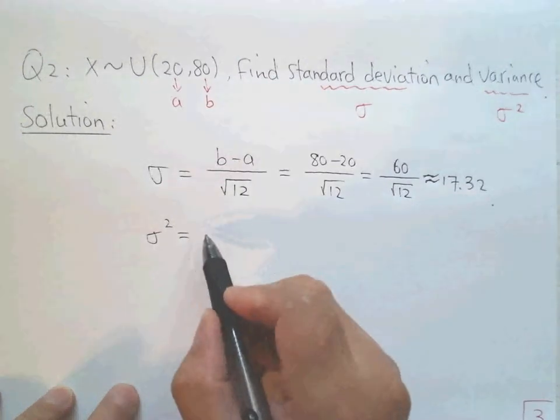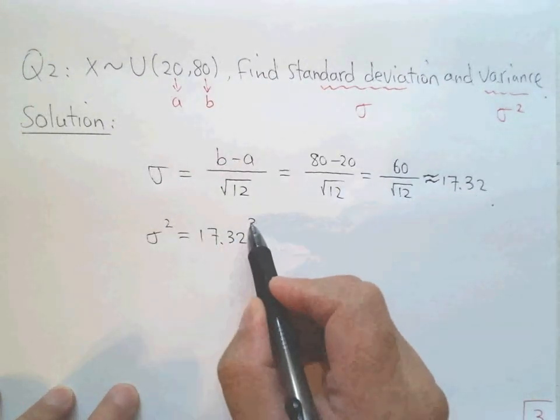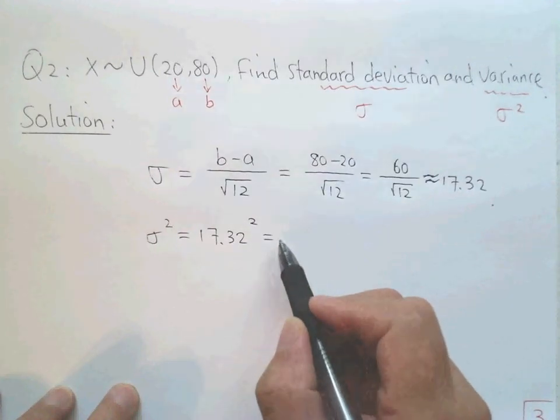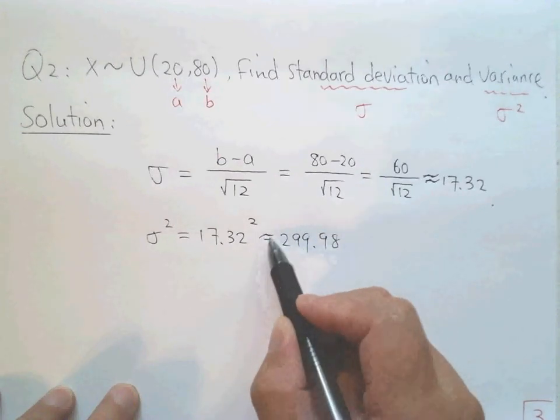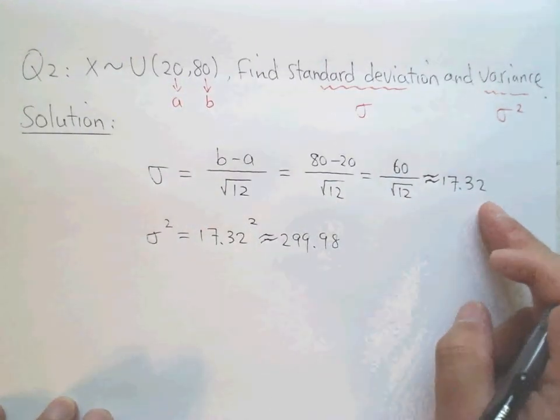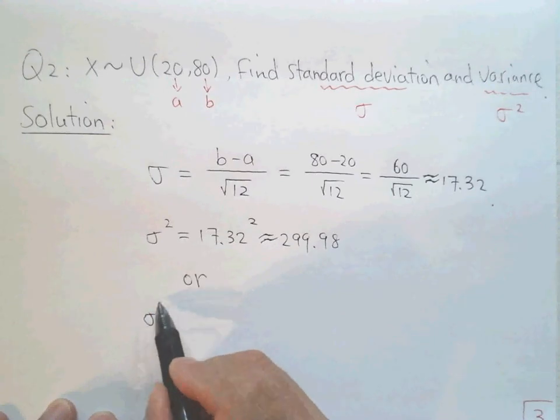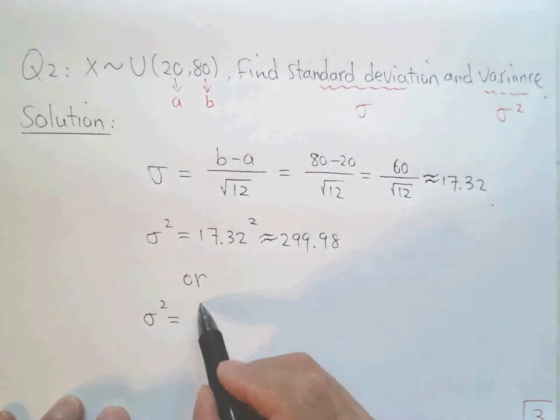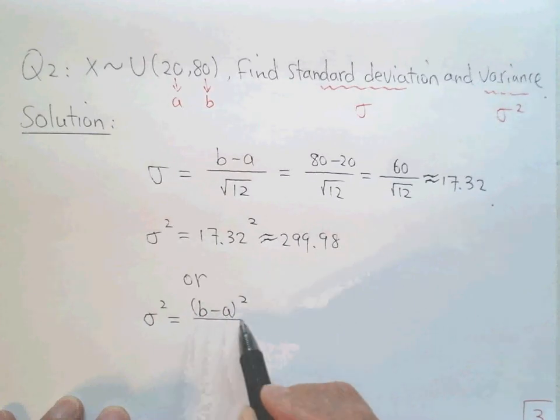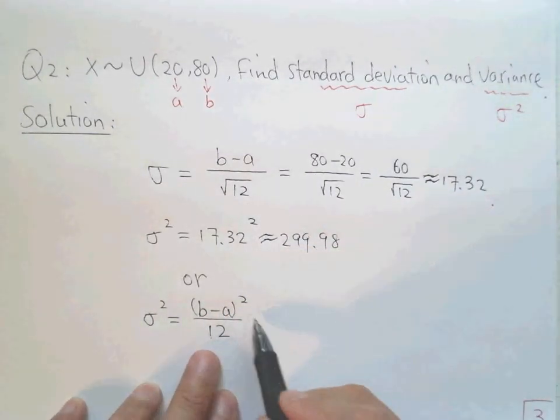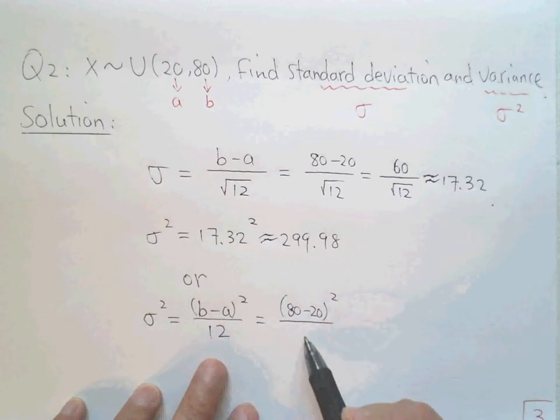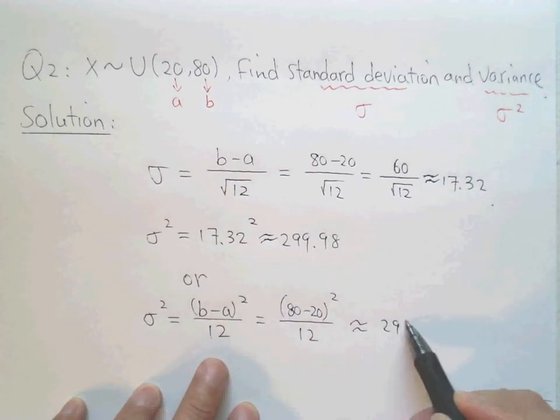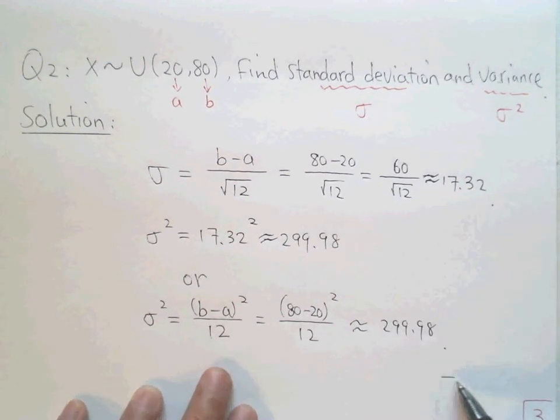I get around 17.32. This is sigma. The second is sigma squared. Now sigma squared, you can do this. Sigma squared, you either directly use sigma is 17.32 squared, and then you do square. I get 299.98. You can directly use these results, or you can do sigma squared using the formula b minus a squared over 12. You can do this, which is 80 minus 20 squared over 12. You do calculation, you should get the same. That's all, thank you.